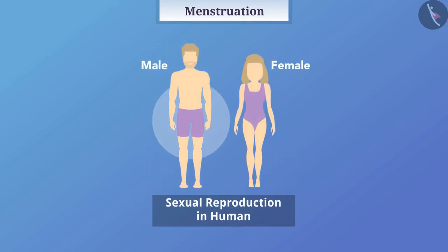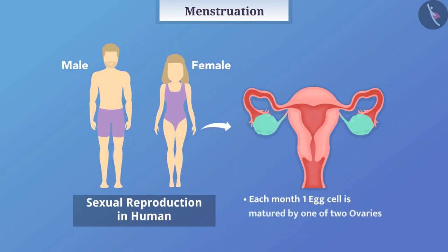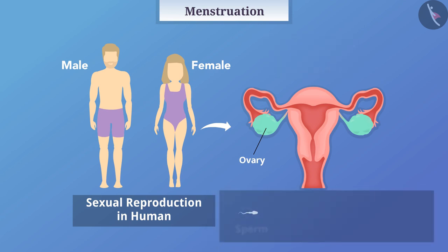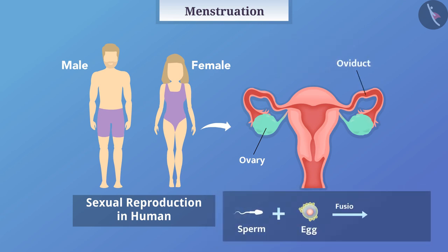Males and females participate in sexual reproduction. In human reproduction, each month one egg cell is matured by one of the two ovaries in the woman's body. If there is a fusion of sperm and egg in the oviduct, a fertilized egg is produced which is called a zygote. The zygote gets implanted on the wall of the uterus.